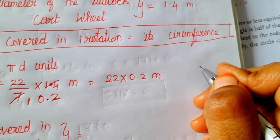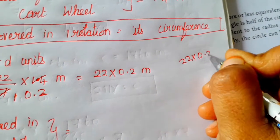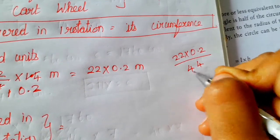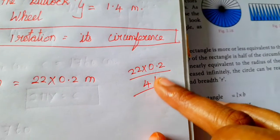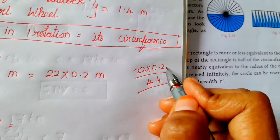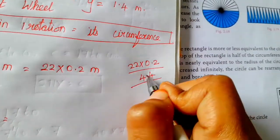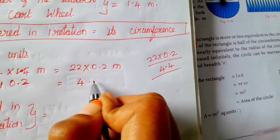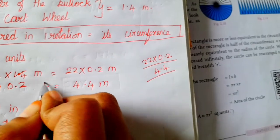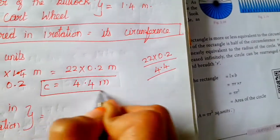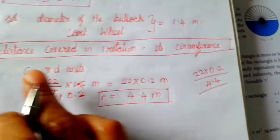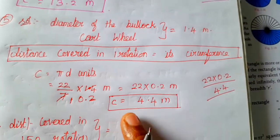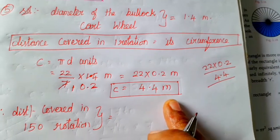Multiply 22 into 0.2: 2 twos are 4, 2 twos are 4, giving 44. Place the decimal point — one decimal place — so the answer is 4.4. Circumference is equal to 4.4 meter. This is the distance covered in one rotation.